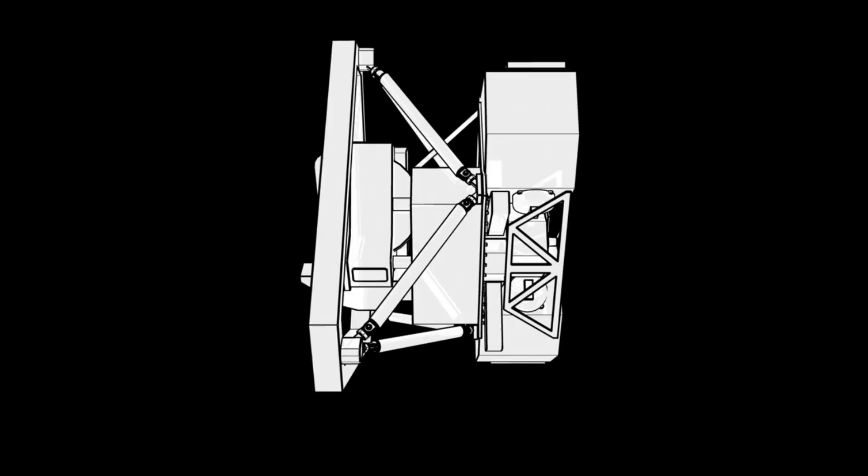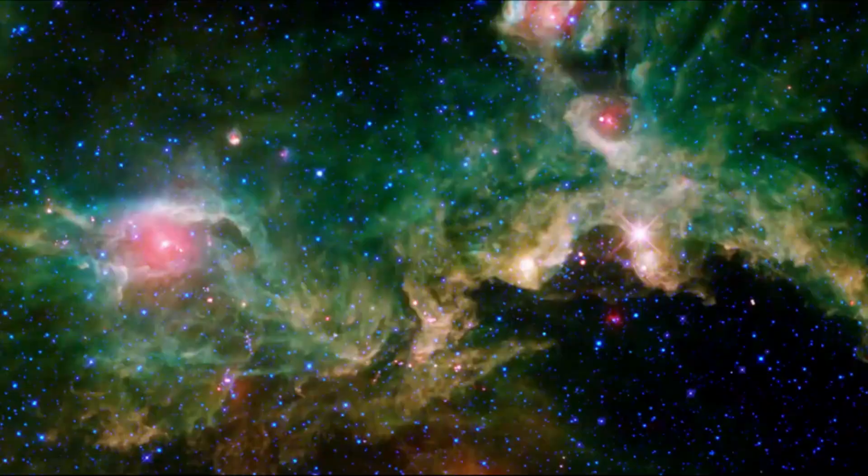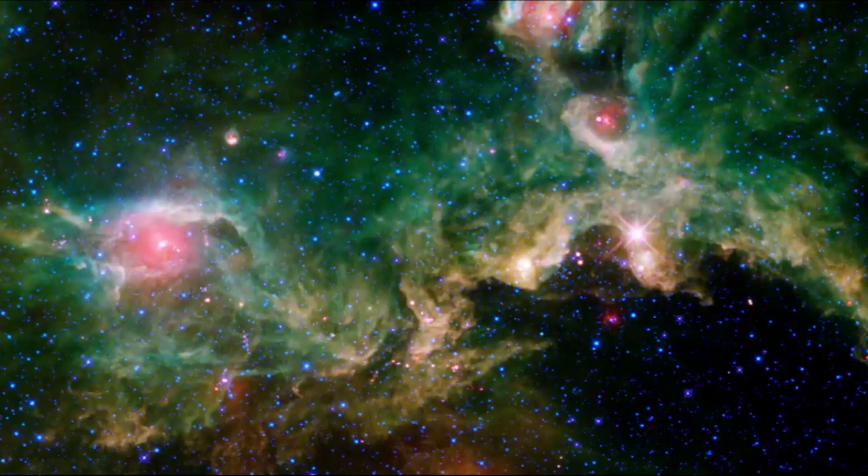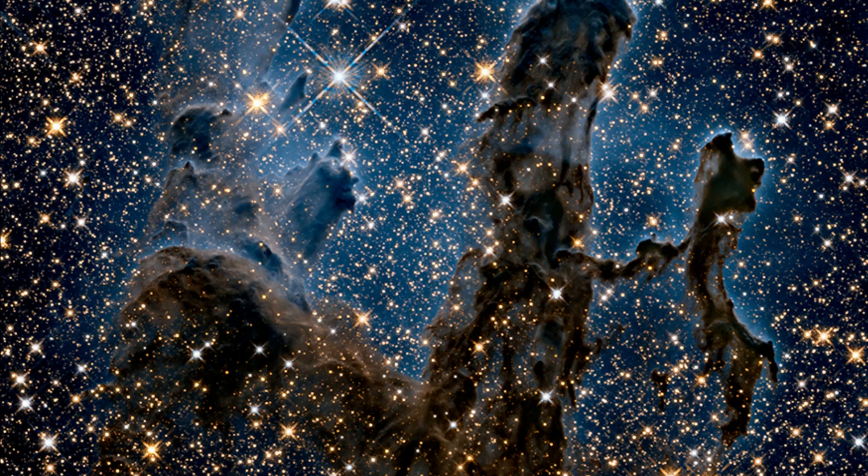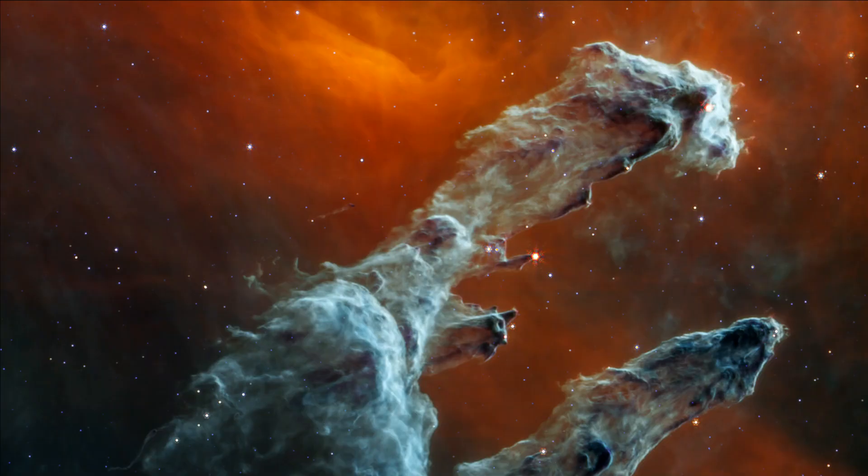Thousands and thousands of stars have formed in this region. This is made plain when examining Webb's recent near-infrared camera or NERCAM image. In MIRI's view, the majority of stars appear missing. This is because many newly formed stars are no longer surrounded by enough dust to be detected in mid-infrared light.